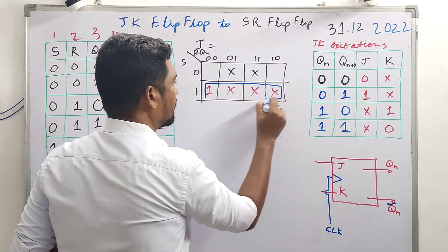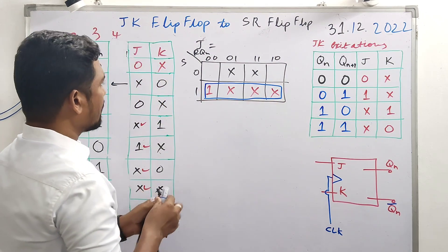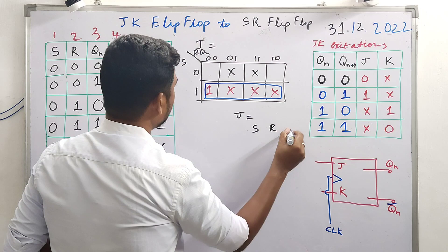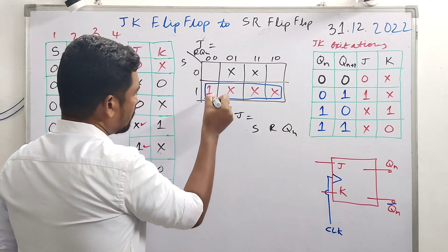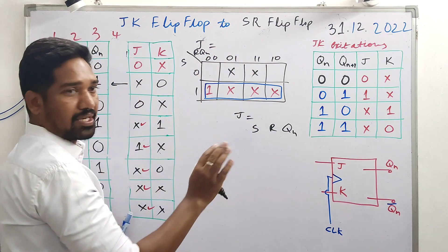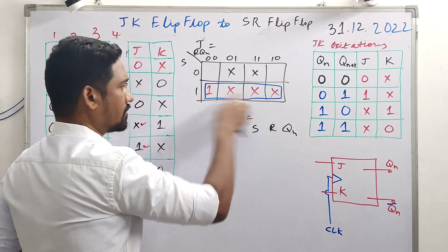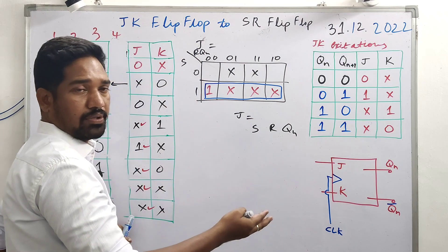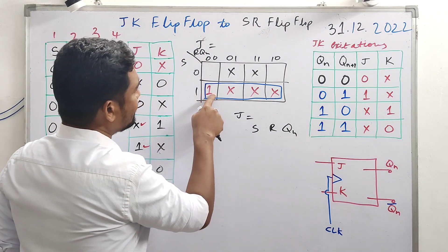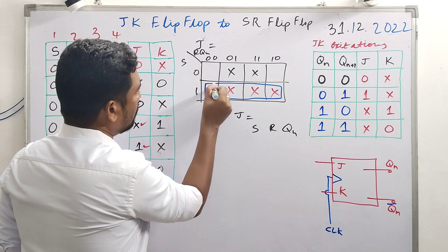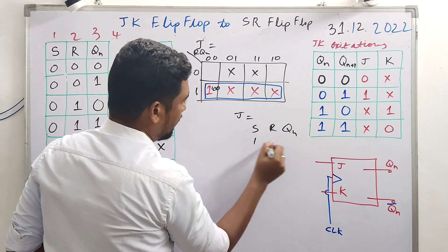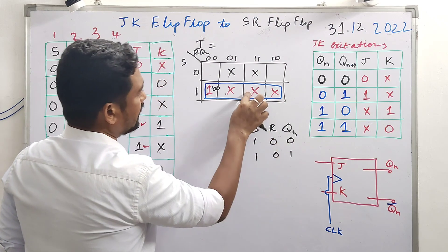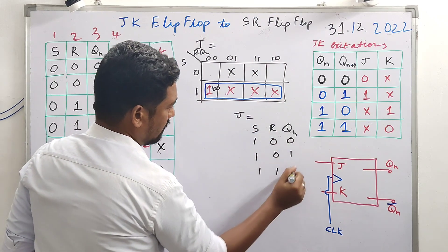Now grouping in the K-map - quad, octal, or pair grouping. The entire combination forms a quad, which helps with reduction. Designing for J: J equation is in terms of S, R, Q(n). There is a don't care here, and pairing with a one gives a pair. A quad gives more reduction - one variable drops out.